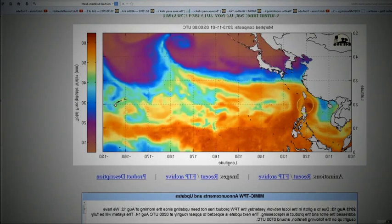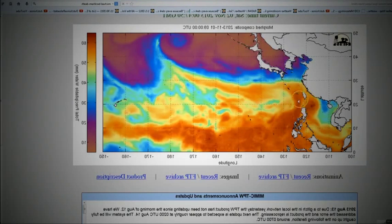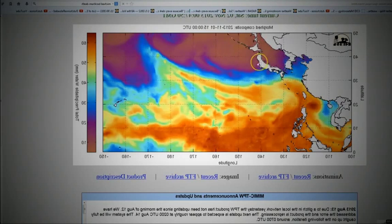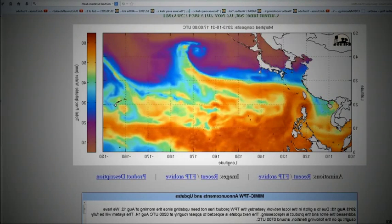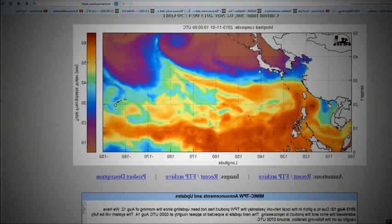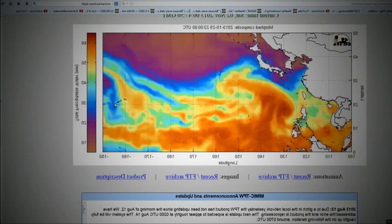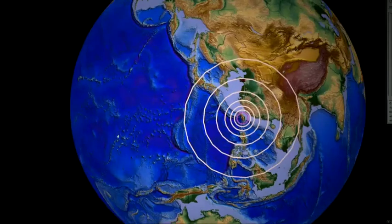So when the earthquake happened, it was right there. Same kind of distance too that we saw before with the two previous tropical cyclones and the earthquake that happened off the shores of Japan. To have that happen again.